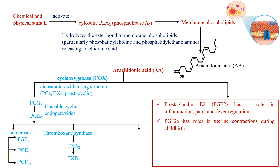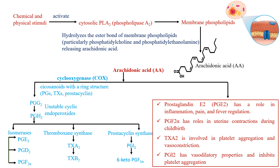Thromboxane synthase creates thromboxane A2 and thromboxane B2. Thromboxane A2 is the superhero of platelet aggregation — it is involved in platelet aggregation and vasoconstriction, helping clot blood and tighten blood vessels. On the other side, prostacyclin synthase creates prostacyclin (prostaglandin I2, also called PGI2 or 6-keto-prostaglandin F1 alpha). PGI2 has vasodilatory properties and inhibits platelet aggregation, bringing balance to the system. These are the different compounds created by the COX pathway.